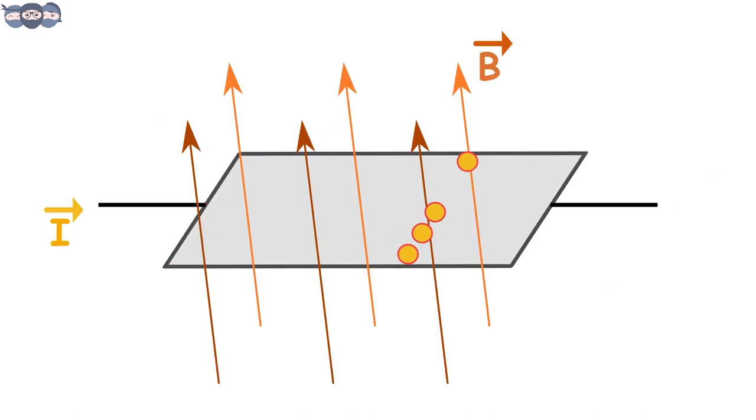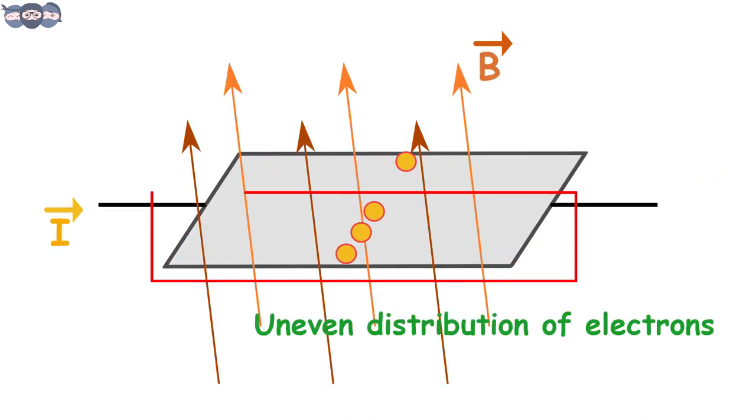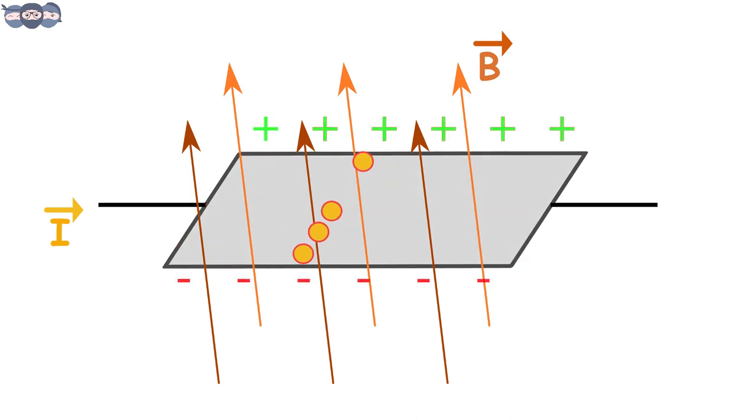Due to this, as observed earlier, electron density will change, giving rise to potential difference across the metal sheet.